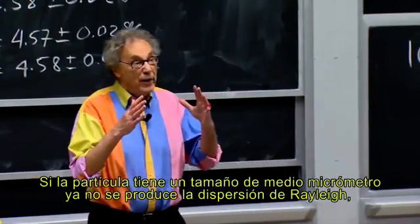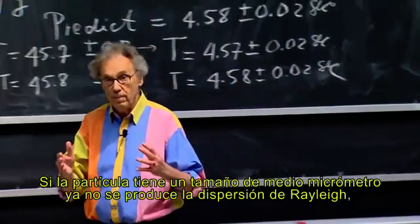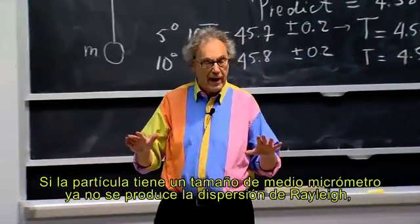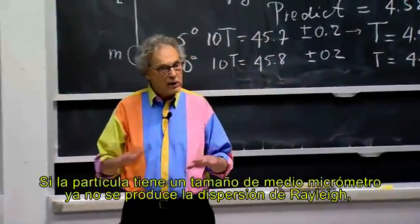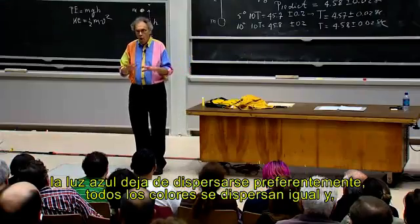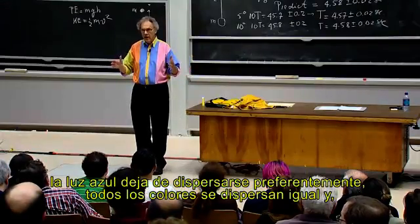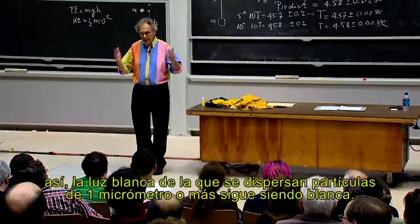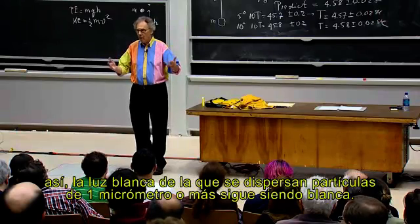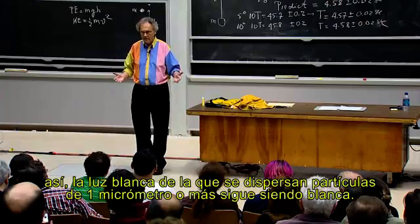If the particles are as large as half a micron, then there is no longer Rayleigh scattering. There is no preferred scattering for the blue light — all colors scatter equally. And so white light scattered off particles that are half a micron or larger remains white.